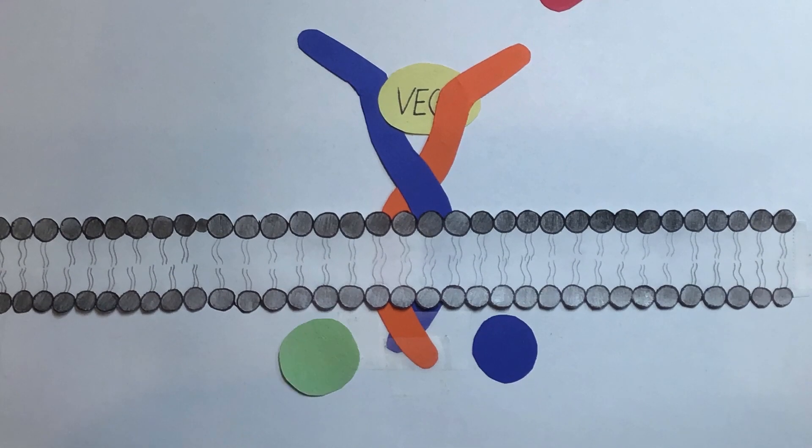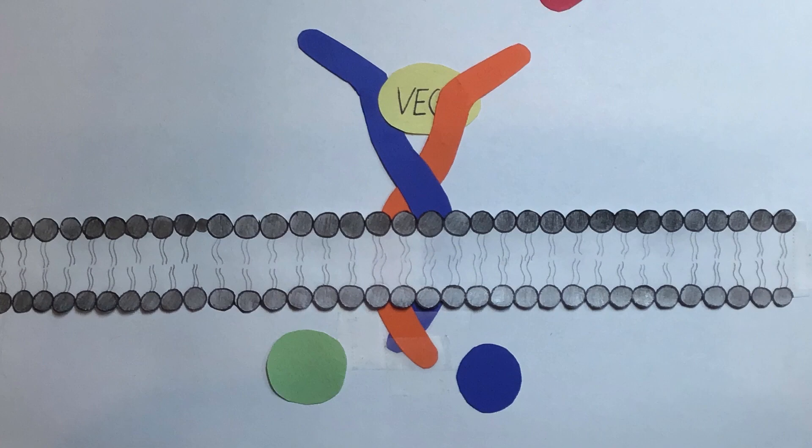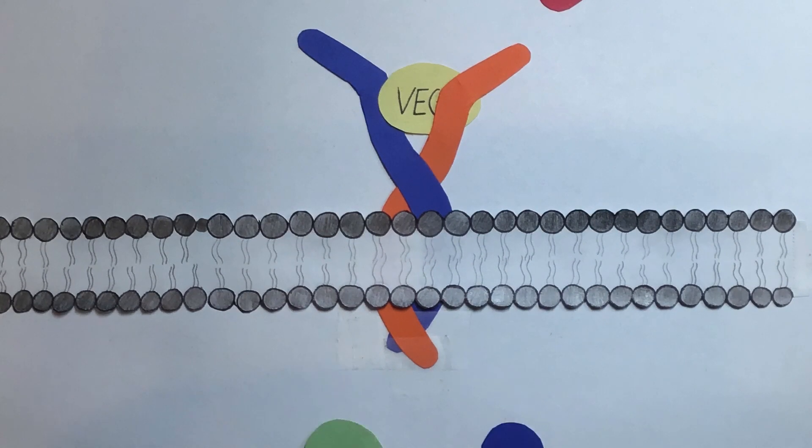Dimerization then gives way to other processes that stimulate signaling proteins inside the cell, beginning the process for angiogenesis.